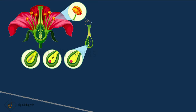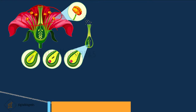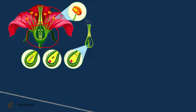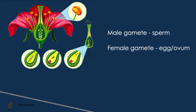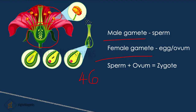Last year we learned about reproduction in plants. They have a male reproductive part and a female reproductive part — the androecium and gynoecium respectively. The male reproductive part produces the male gamete and the female reproductive part produces the female gamete. Like that, in animals the male gamete is called sperm and the female gamete is called the egg or ovum. When sperm and egg fuse together, they form the zygote, which develops into a new individual.